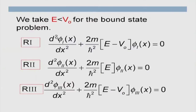Let us write the Schrödinger equations in the three regions separately. In Region 1: d²φ₁/dx² + (2m/ℏ²)(E − V₀)φ₁ = 0. In Region 2 (where V = 0): d²φ₂/dx² + (2m/ℏ²)E·φ₂ = 0. In Region 3, the potential returns to V₀, so we write the same equation as Region 1 but for φ₃. Since E < V₀, the quantity (E − V₀) is negative, and I prefer to rewrite it as −(V₀ − E) to always work with positive real numbers.